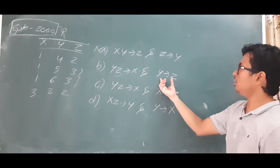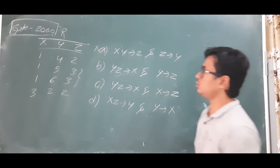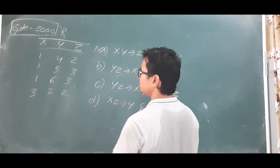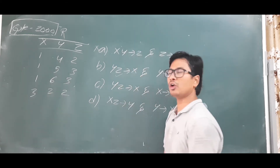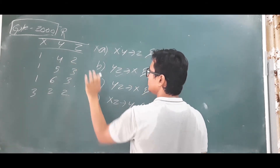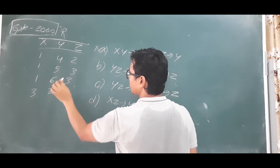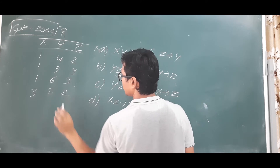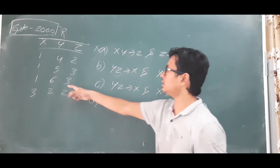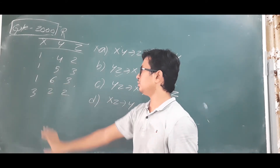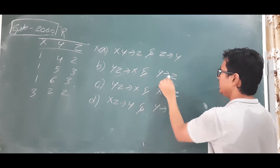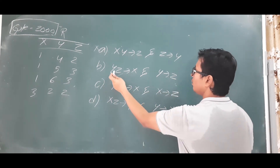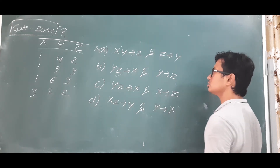Now let's check Y determines Z. For Y=4, is it repeating anywhere in attribute Y? No — single value. For Y=5, only single value. For Y=6, repeating in Y? No. For Y=2, no. So Y determines Z is a valid functional dependency. And Z determines X is also a valid functional dependency.